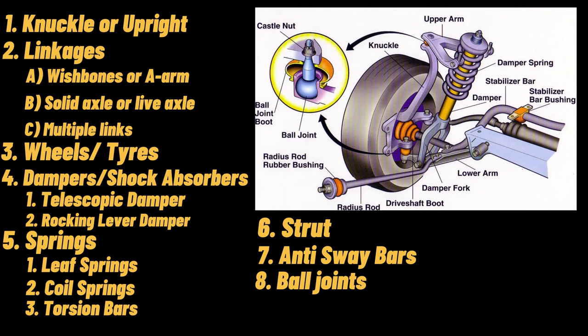8. Ball joints. Ball joints are the critical components of suspension systems. They help to connect different parts and linkages and allow them to move relative to other linkages. Ball joints consist of a metal housing and studs. The stud is able to swing and rotate within the housing. Grease lubrication is also provided in the socket of the ball joint. Inside the housing, bearings are provided, which can be metal or plastic. The two ends of ball joints are connected to the housing and stud respectively.